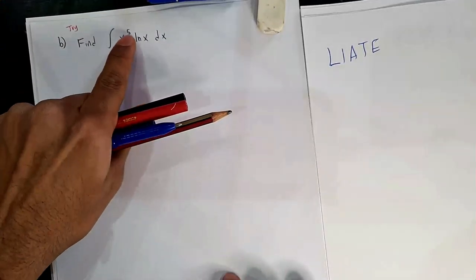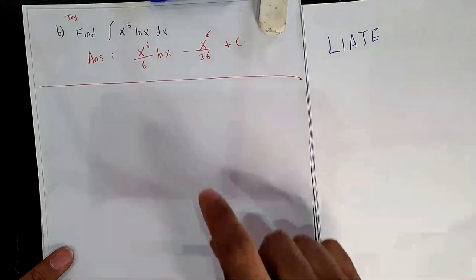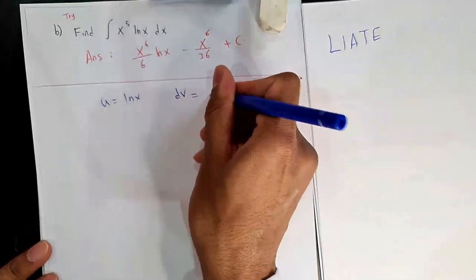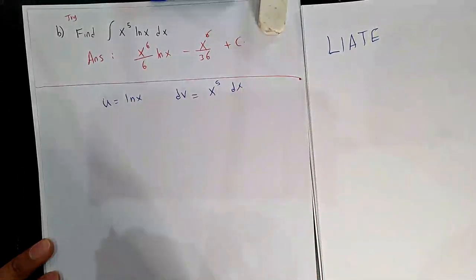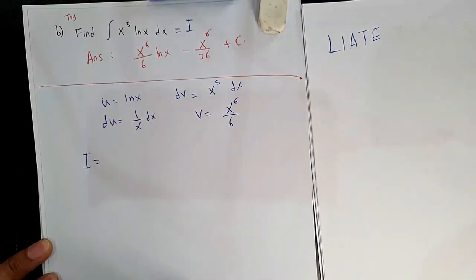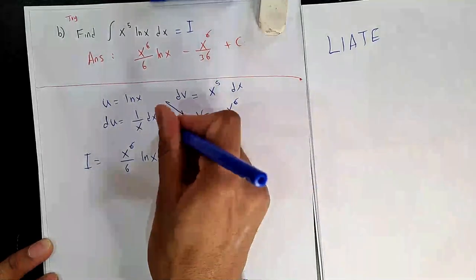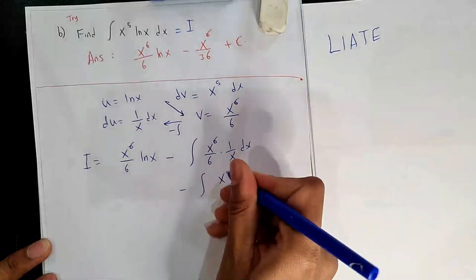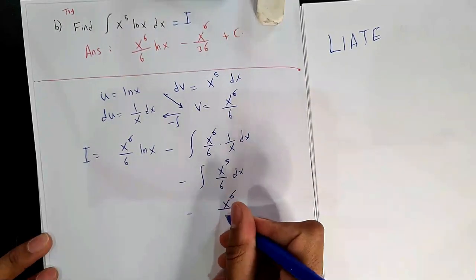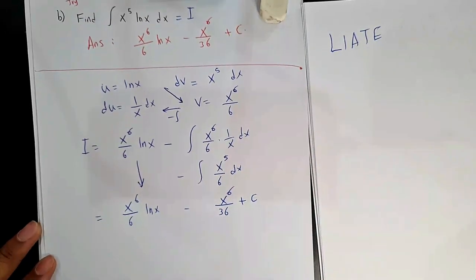Try: ∫x⁵ ln(x) dx. By LIATE, L comes first, so u = ln(x) and dv = x⁵ dx. Then du = (1/x)dx and v = x⁶/6. Our integral is: (x⁶/6)·ln(x) − ∫(x⁶/6)·(1/x)dx = (x⁶/6)ln(x) − ∫(x⁵/6)dx = (x⁶/6)ln(x) − x⁶/36 + C.